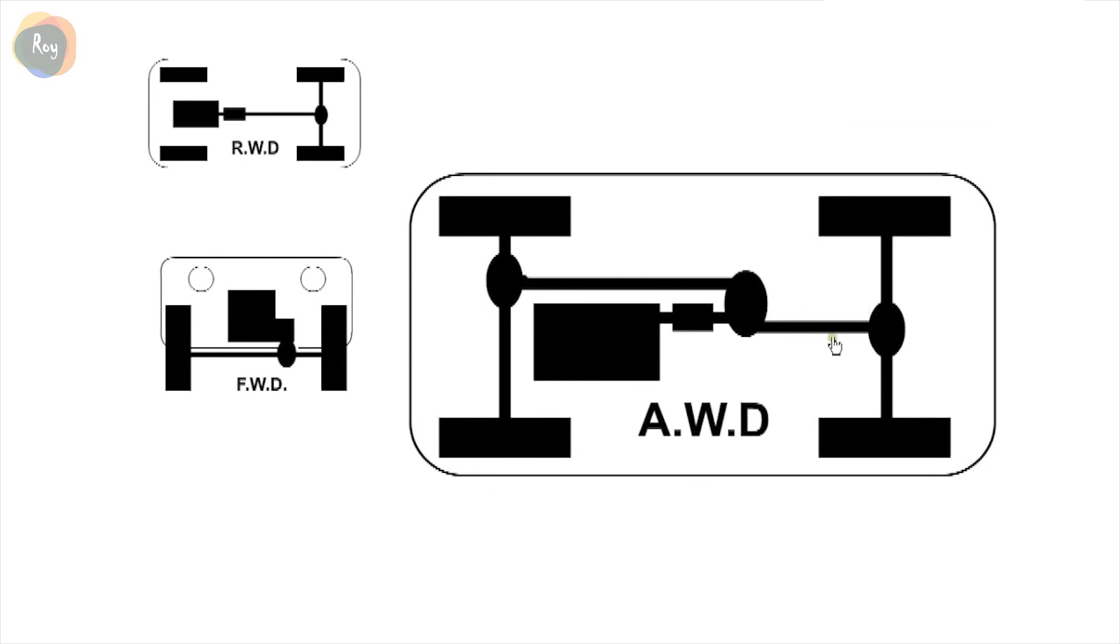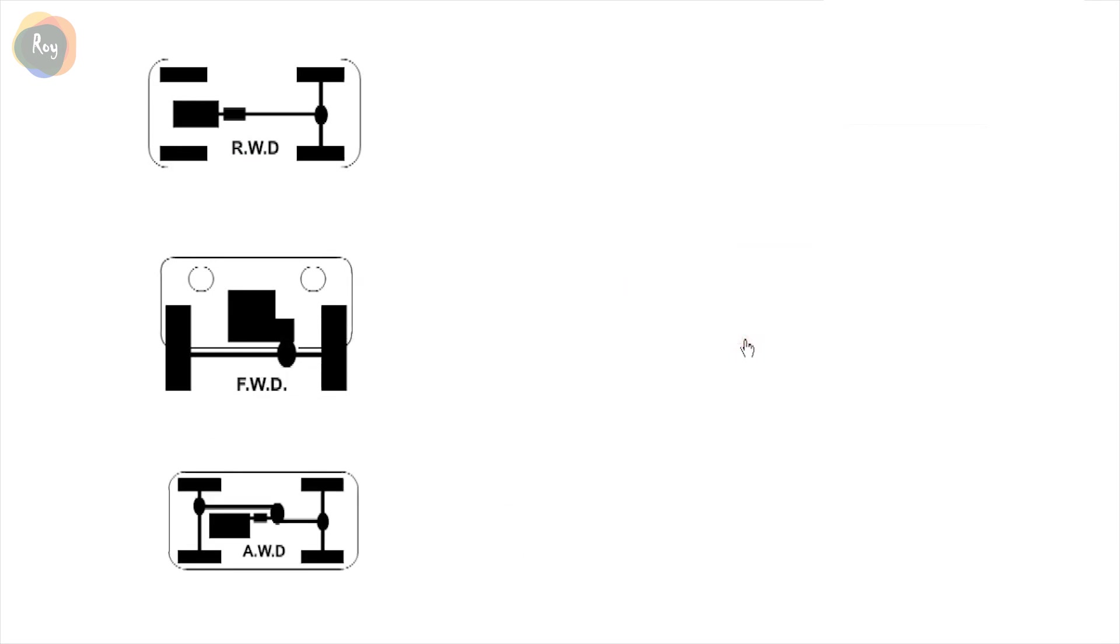With an all-wheel drive car, we normally have three differentials. One in the middle to portion torque between front and rear, one in the back axle, and one in the front axle. Normally, the center diff is a viscous coupling.